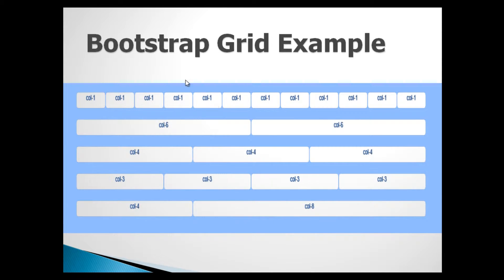So finally, let's see how various columns look in a grid. Here we can see a row having 12 columns. The number value demonstrates the span of columns. As the grid is divided into 12 columns, we use 12 columns where each spans 1 of 12 to achieve the first example. To occupy 50% of grid width, we use 2 columns where each spans 6 of 12. For 33%, we use 3 columns where each spans 4 of 12. The last example shows a row with 2 columns — one spanning 4 of 12 and the other spanning 8 of 12.